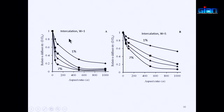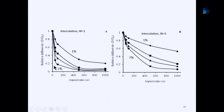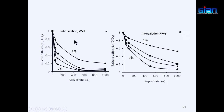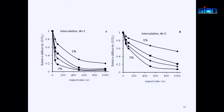As you can see from the graph, if you have only one platelet with an aspect ratio of 200, you can reduce permeability from 1 to around less than 0.2. But for the same aspect ratio of 200 with higher intercalation, you can only reduce to about 0.5. So lower intercalation means better reduction in diffusivity or permeability — better barrier property.